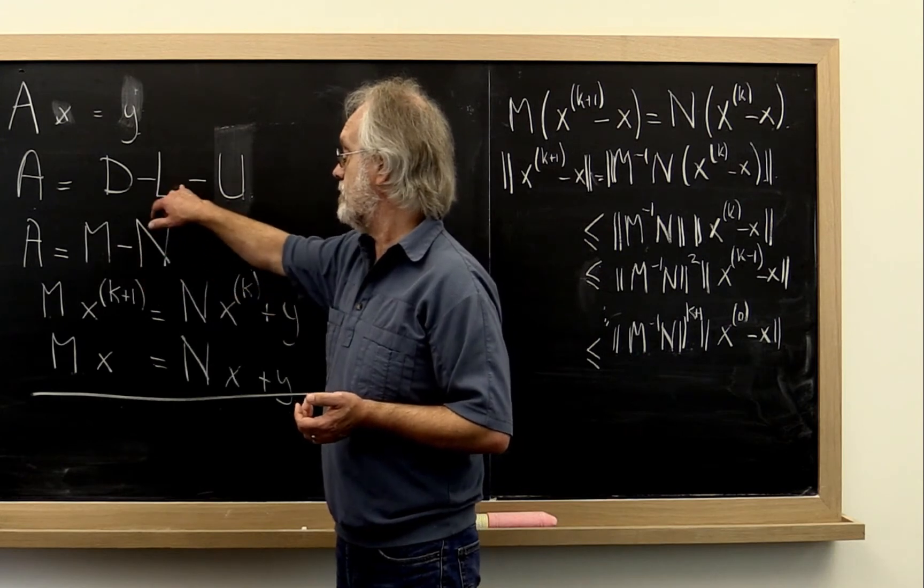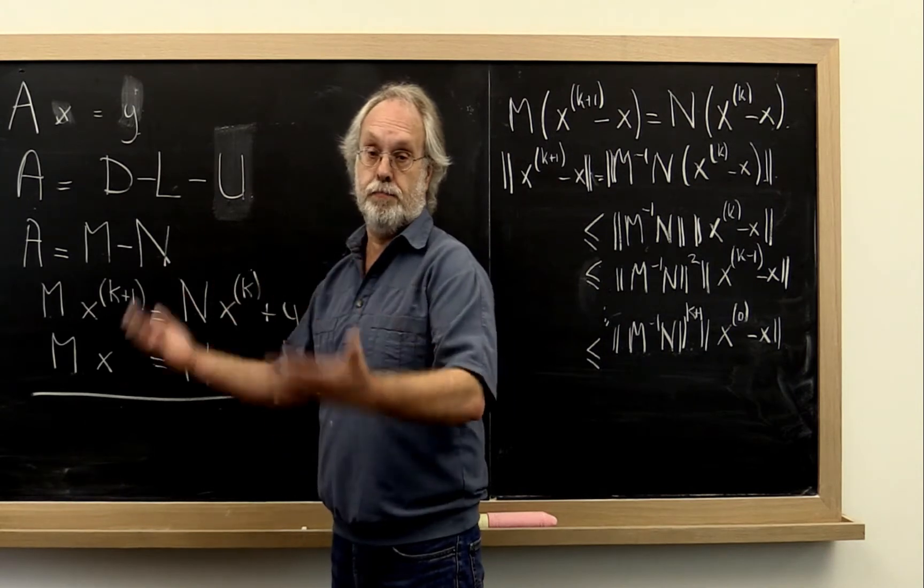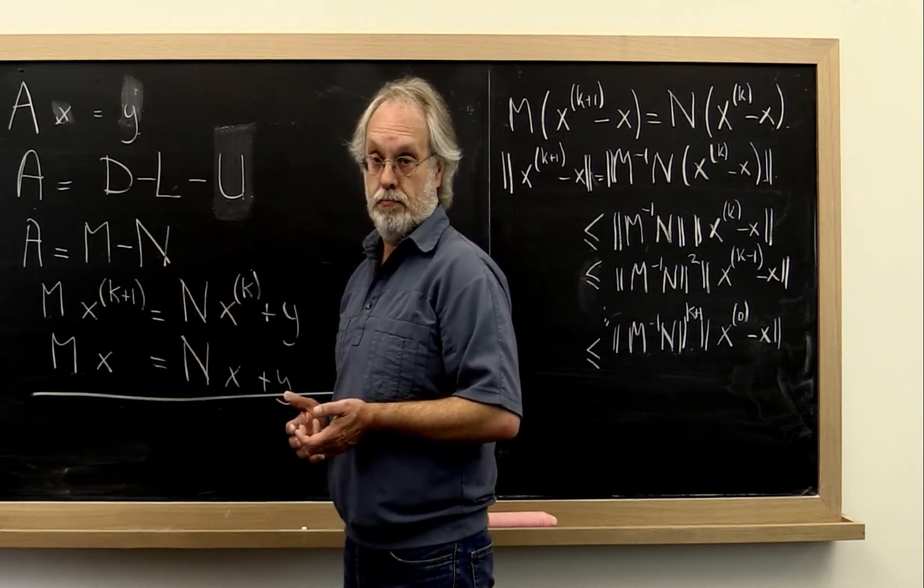But it's also important that solving with M is cheap and that multiplying with N is cheap. Now if N is just some submatrix of A, usually what happens is that N is a sparse matrix and therefore multiplying with it is cheap. That's good.